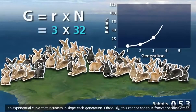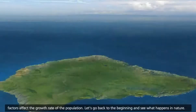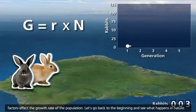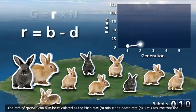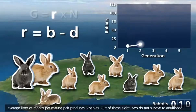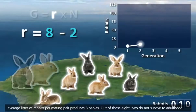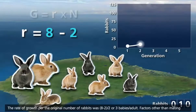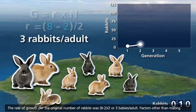Obviously, this cannot continue forever because other factors affect the growth rate of the population. The rate of growth can also be calculated as the birth rate, B, minus the death rate, D. Let's assume that the average litter of rabbits per mating pair produces eight babies. Out of those eight, two do not survive to adulthood. The rate of growth per the original number of rabbits was eight minus two divided by two, or three babies per adult.